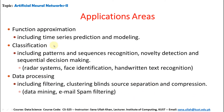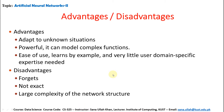Application areas include: function approximation including time series prediction, classification problems including pattern and sequence recognition, novelty detection, radar systems, face identification, handwritten text recognition, data filtering, clustering, blind source separation, compression, data mining, and spam filtering. Advantages: adapts to unknown situations, can model complex functions, easy to use, learns by example. Disadvantages: forgets, some neurons do not provide exact solutions, and large network complexity is required.